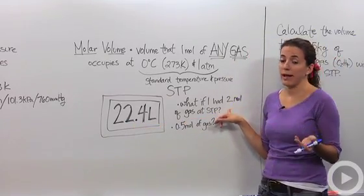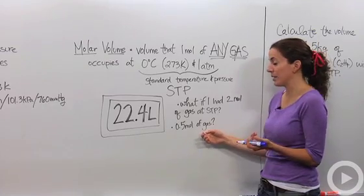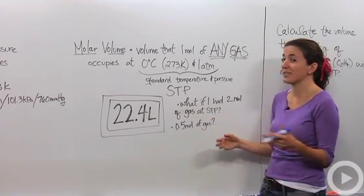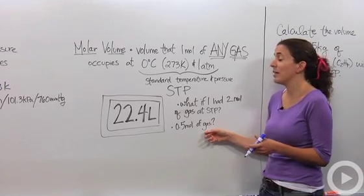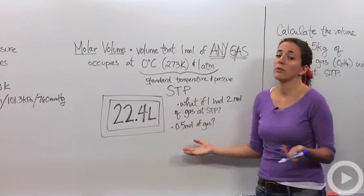What if I had two moles of that particular gas? Well, it would be 44.8 liters. What if I had half a mole of that particular gas? Remember, notice I didn't tell you what gas it was because it doesn't matter. It would be 11.2 liters. So how can we use this number when dealing with calculations?